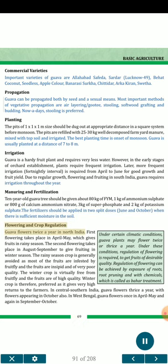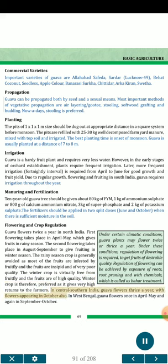Flowering and Crop Regulation: Guava flowers twice a year in North India. The first flowering takes place in April–May, giving fruits in the rainy season. The second flowering takes place in August–September to give fruiting in winter season. The rainy season crop is generally avoided as most fruits are infested by fruit fly and the fruits are unripe and of very poor quality. The winter crop is virtually free from fruit fly and the fruits are of high quality. In central and southern India, guava flowers thrice a year. In West Bengal, guava flowers once in April–May and again in September–October. Under certain climatic conditions, regulation of flowering is required to get fruits of desirable quality, which can be achieved by root pruning and chemicals (Bahar treatment).